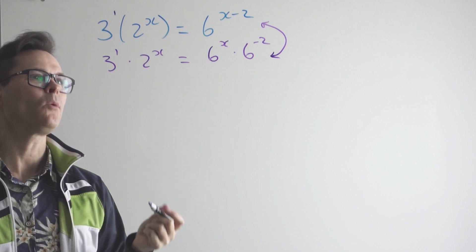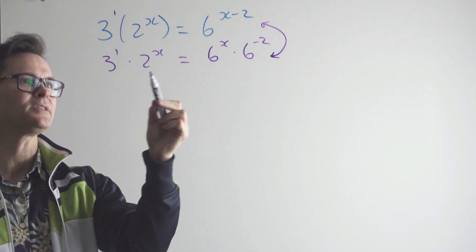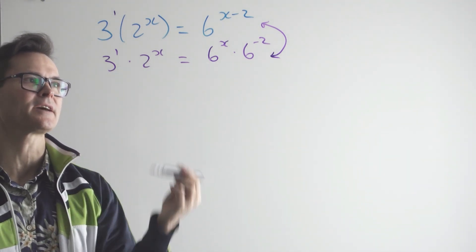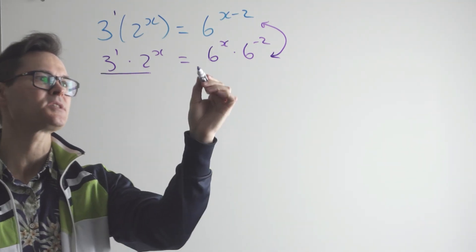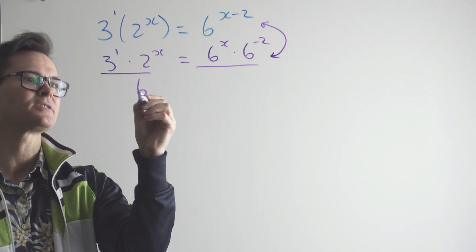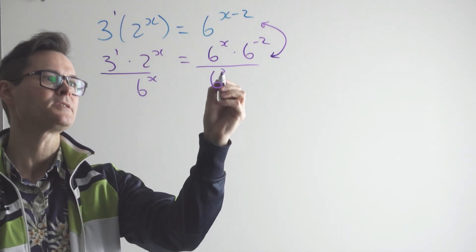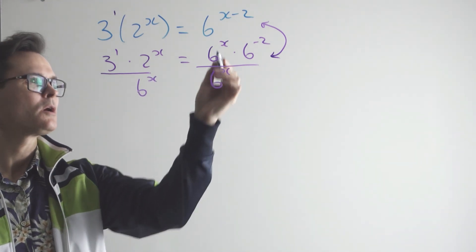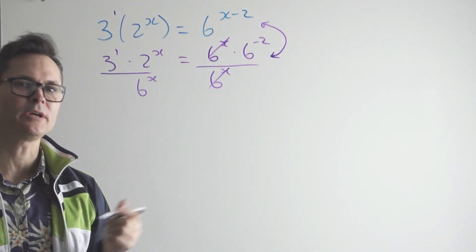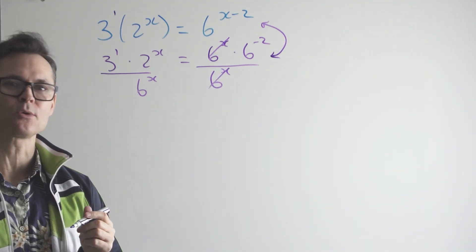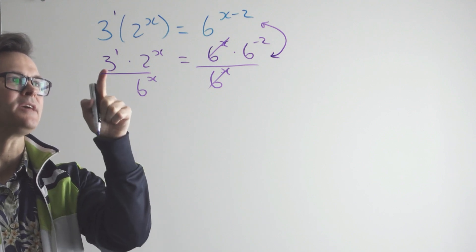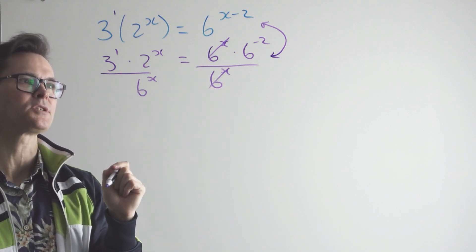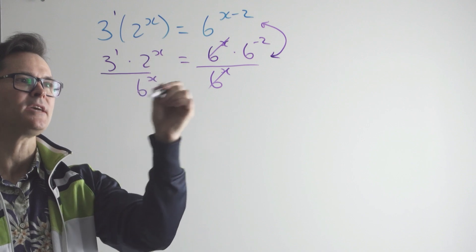Well, now watch. I can now isolate, see, the 2 to the x and the 6 to the x can come together. What I'm going to do is I'm going to divide both sides by 6 to the x. Six to the x, six to the x, these are going to cancel off. I don't have to worry about division by zero because these powers can't be negative. And also see the 3 here, I can take that over to meet up with the other side.